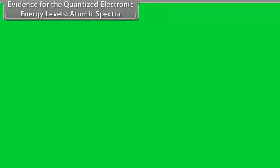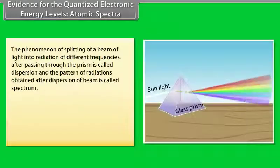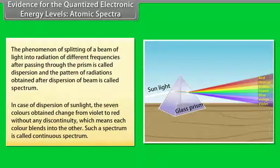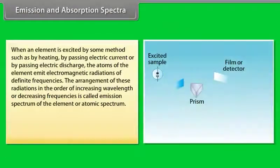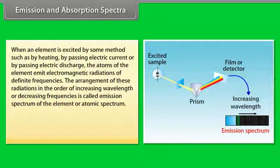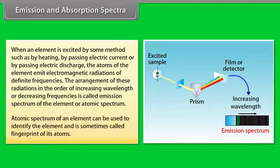Evidence for quantized energy levels — Atomic spectra: The splitting of a beam of light into radiations of different frequencies after passing through a prism is called dispersion, and the pattern obtained is called a spectrum. Dispersion of sunlight gives seven colors changing continuously from violet to red — called a continuous spectrum. When an element is excited by heating, electric current, or electric discharge, its atoms emit electromagnetic radiations of definite frequencies; the arrangement by increasing wavelength is called the emission spectrum or atomic spectrum, which can identify an element — sometimes called the fingerprint of its atoms.